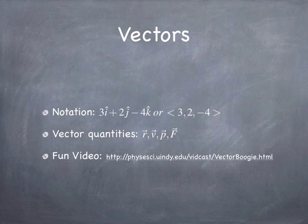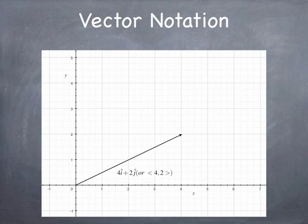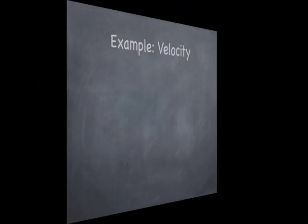I've put together a vector video you can look at — the URL is posted on Ace. For vector notation: a vector with x-component 4 and y-component 2 can be written as 4î + 2ĵ, or in angle-bracket notation as ⟨4, 2⟩. Another vector with x-component 1 and y-component 3 is î + 3ĵ, or ⟨1, 3⟩. When you add them, you add the x-components and y-components separately, giving the resultant vector ⟨5, 5⟩.